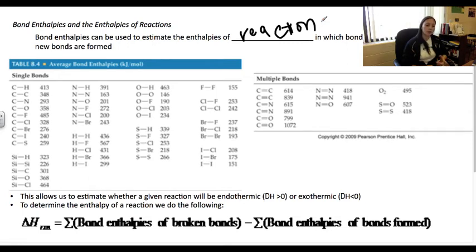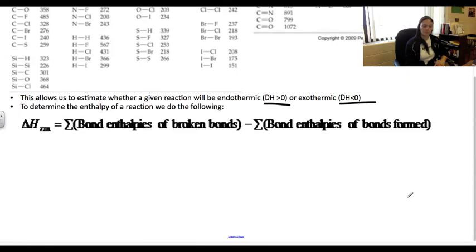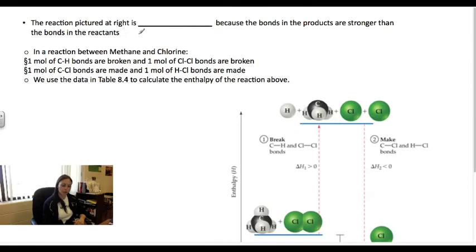So then we can estimate whether a reaction is going to be endothermic or exothermic. Endothermic means when you put energy in, that's going to be a positive value. Exothermic, you get energy out, so it's less than zero and it's a negative value. Delta H for a reaction is the sum of the bond enthalpies of the broken bonds minus the bond enthalpies of your bonds that are formed.